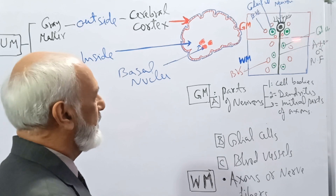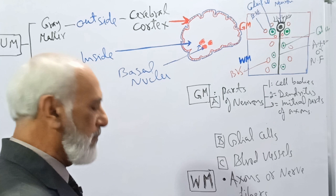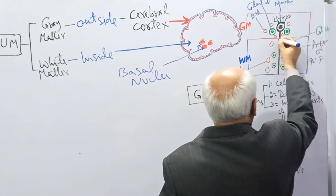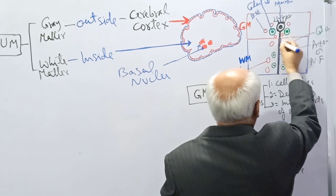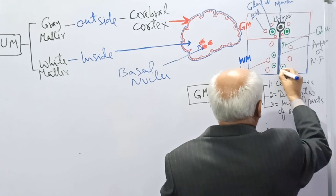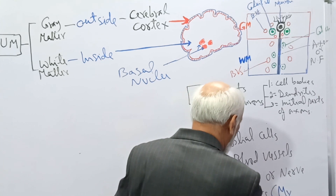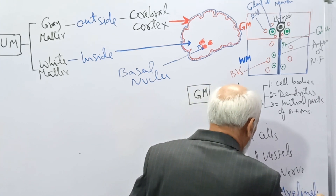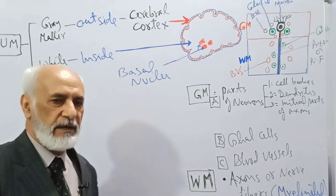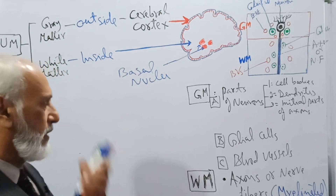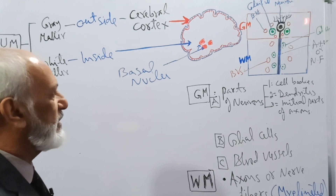As the axons leave the grey matter and enter the white matter, they become myelinated — covered by a sheath known as the myelin sheath. So these axons, or nerve fibers, in the white matter are myelinated. The part of the axons in the grey matter is non-myelinated.